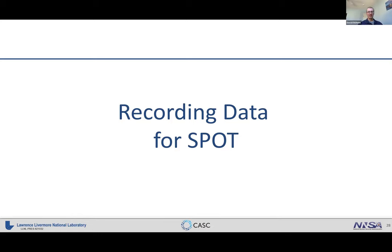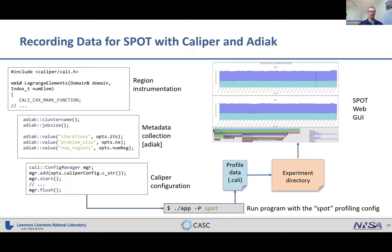Now let's go into more detail on how to use Caliper to record data for the Spot visualization and analysis framework. On the left side of the workflow are changes you need to make to your program to enable Spot; on the right are things you do at runtime for an individual program run. Spot works with region time profiles, so the first thing is to add region instrumentation — but now we also need to add metadata describing our specific program runs.